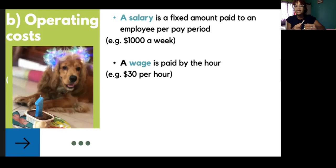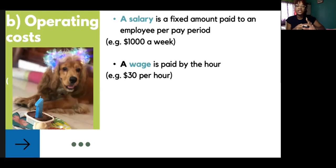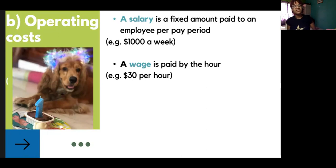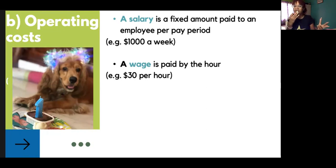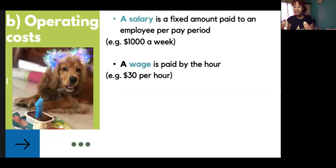The main difference is that a salary is paid per pay period — that might be a week, a month, or a fortnight — but a wage varies because it differs according to how much time you work. So if you work 40 hours within that week you still get a thousand dollars on salary, or if you work two hours you still get a thousand dollars. But if it's a wage and you work 40 hours, you get 40 times 30, which is $1,200.